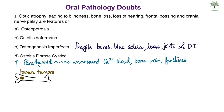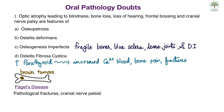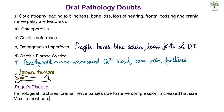We can also rule out Paget's disease, even though it is a differential diagnosis of osteopetrosis. Paget's disease clinical features include bone pain, pathological fractures, cranial nerve palsies due to nerve compression, increased head size due to skull enlargement, and the maxillary bone is the most common bone involved in the skull.